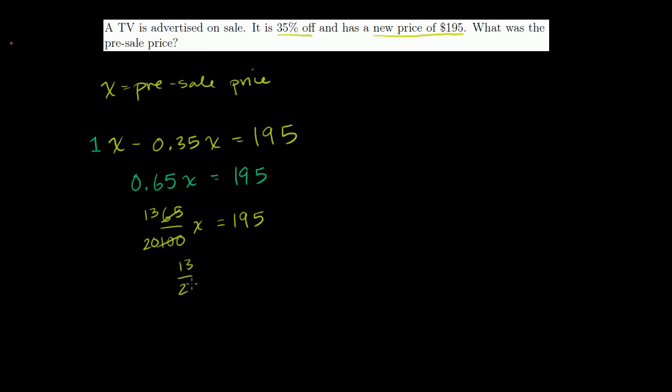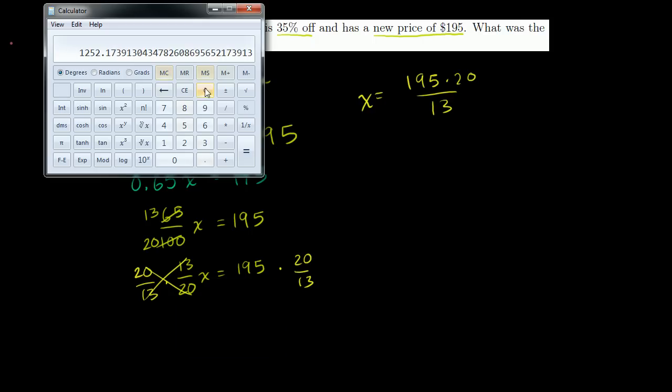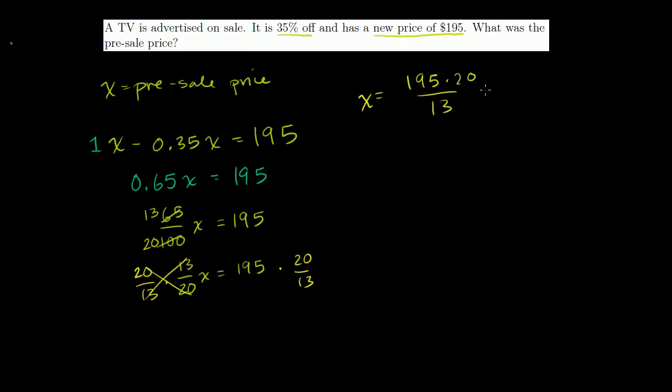So we get 13 over 20x equals 195. And now we can multiply both sides by the inverse of this. So 20 over 13 times that equals 195 times 20 over 13. These cancel out. And we get x equals 195 times 20 over 13. I'll take the calculator out for this one. So you get 195 times 20 divided by 13 equals $300. So the original price was $300. You take 35% of $300, which is $105, and you will be left with $195.